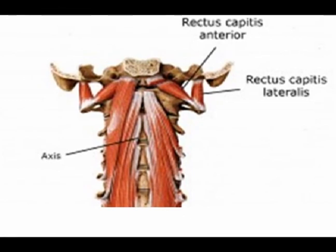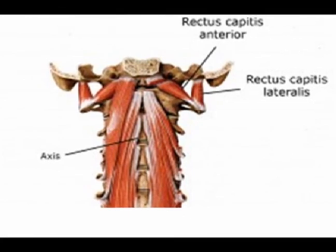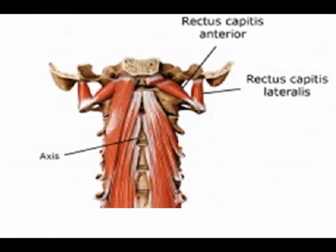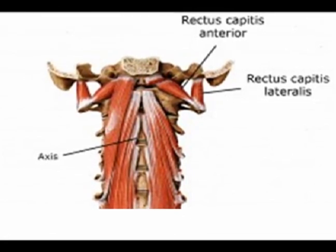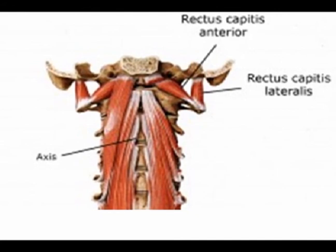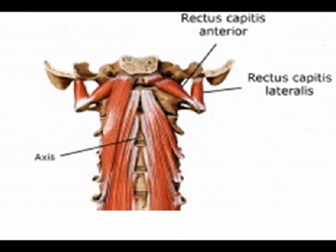The rectus capitis lateralis has an origin on the superior surface of the transverse process of the atlas. It inserts into the inferior surface of the jugular process of the occiput. Its concentric action when contracted bilaterally is to stabilize the head.